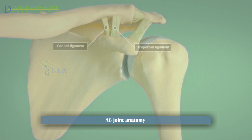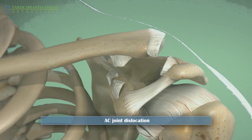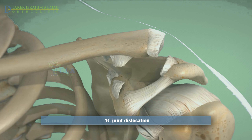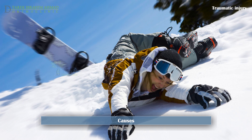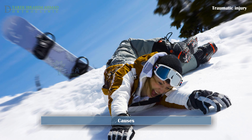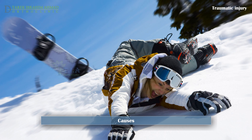The acromioclavicular joint plays an important role in shoulder movement. AC joint dislocation is a traumatic injury to the joint with disruption of the acromioclavicular ligaments and/or coracoclavicular ligaments, so that the acromion begins to move away from the clavicle. An AC joint injury often occurs as a result of a direct blow from a fall onto the shoulder or on an outstretched arm.